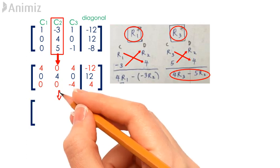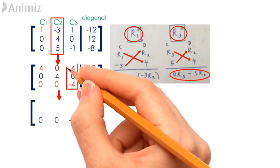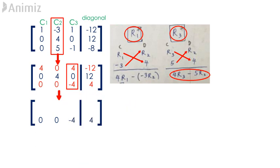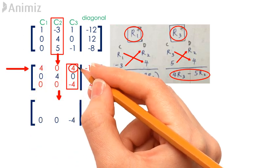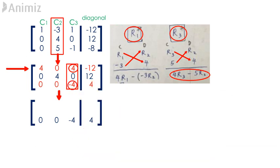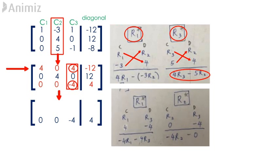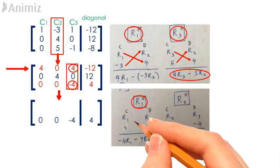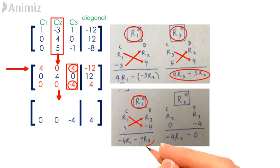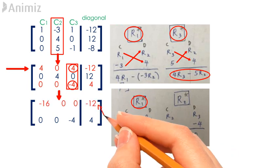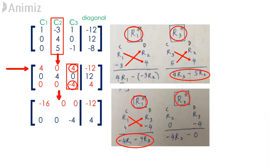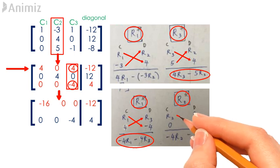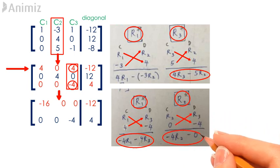Proceeding to the third step, we refer to column 3 of the matrix. Row 1 and row 2 contain the elements that will be changed. The element in row 1 that will be changed is 4, whereas the diagonal element in this column is negative 4, which exists in row 3. Using the 2x2 matrix determinant formula AD minus BC, new row 1 equals negative 4R1 minus 4R3, and new row 2 equals negative 4R2 minus 0.